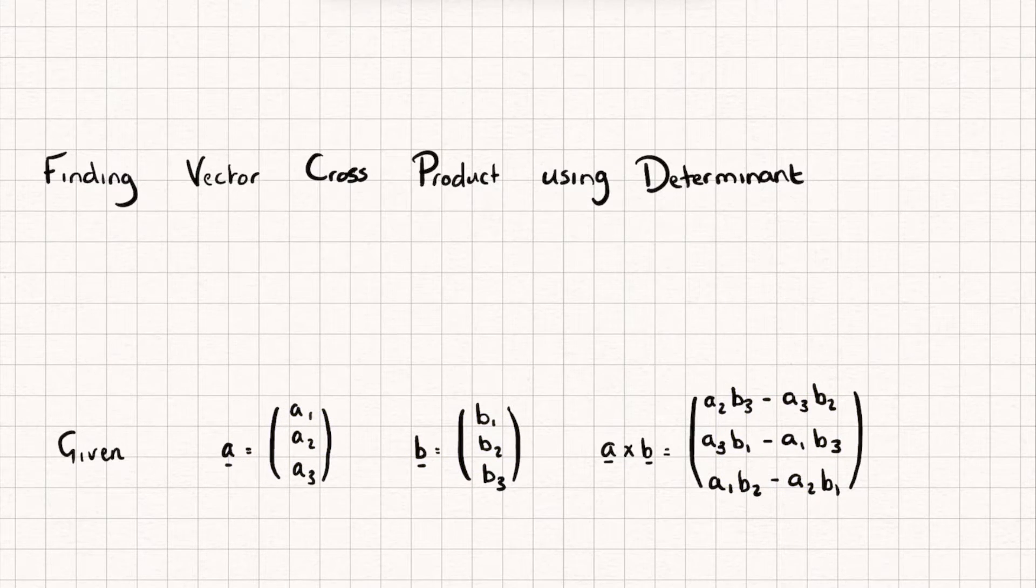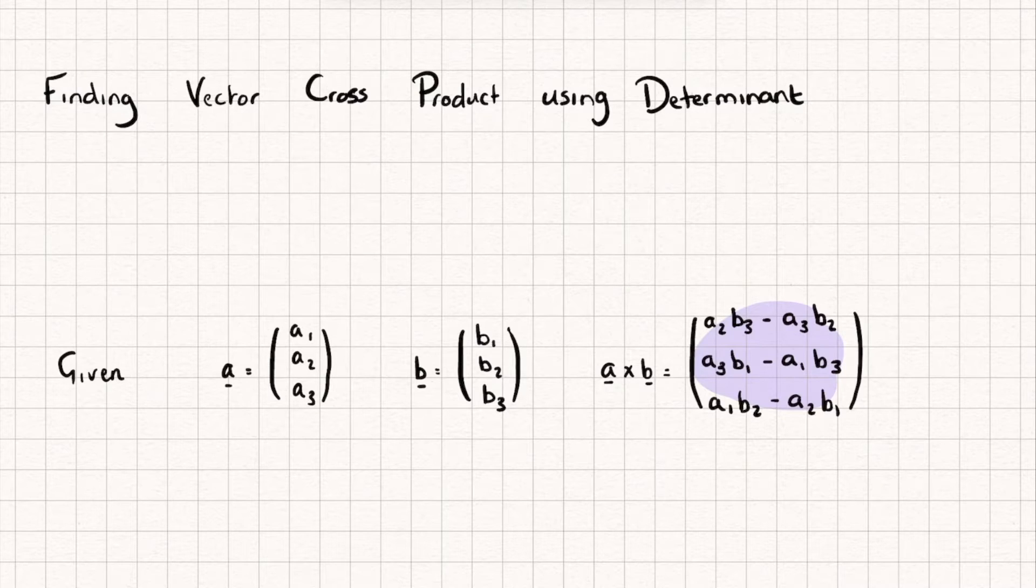Now you can use this to find a cross b, but it is a bit fiddly—you have to find each of the elements, substitute them in, and then calculate it. There is an alternative way we can do this, which is by finding the determinant of a three by three matrix, and I'll show you what that matrix is.